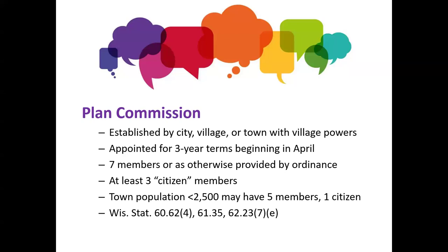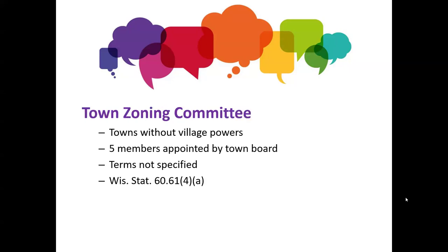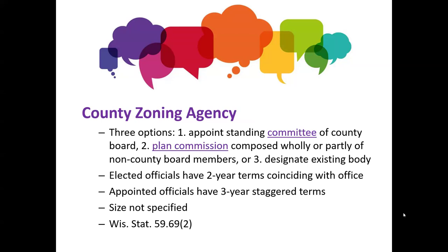This is in contrast to a town zoning committee, typically in counties where they do not have general zoning. When they first appointed zoning committees, they stuck with that terminology. This is meant for towns without village powers — five members are typically included, appointed by the town board. At the county level there is the most variation. There are actually three different options: appoint a standing committee of the county board, which is the most frequent option; appoint a plan commission composed wholly or partly of non-county board members; or designate an existing body.